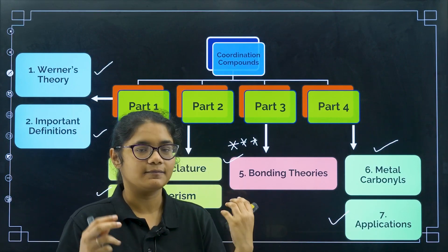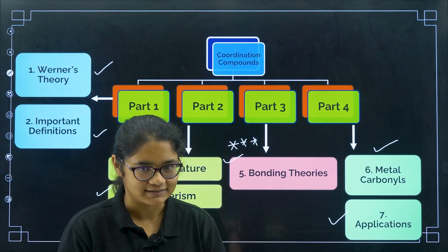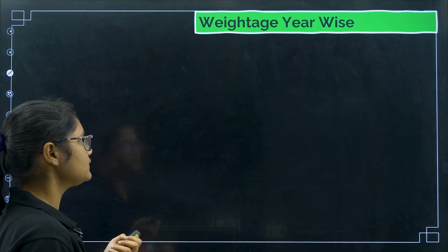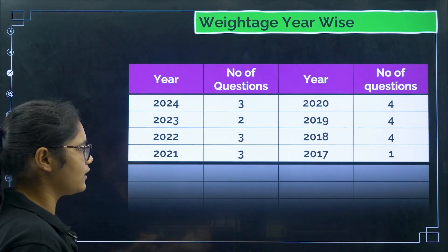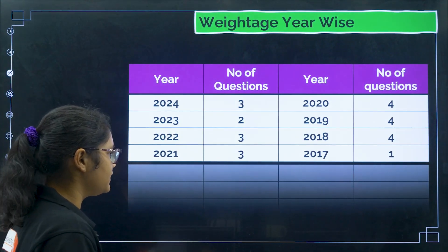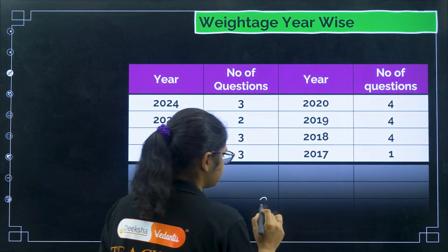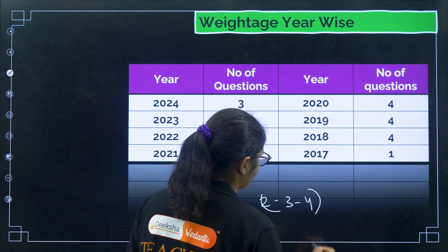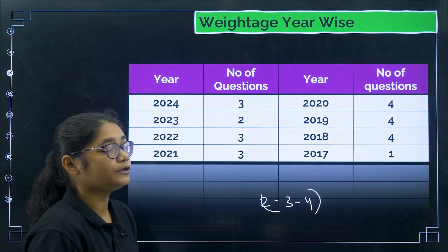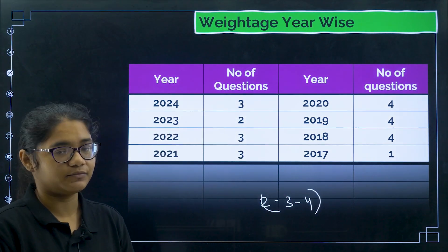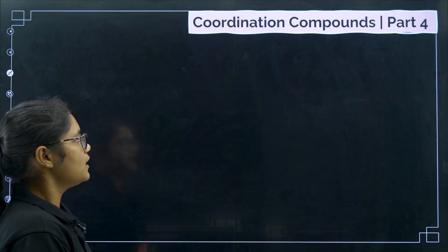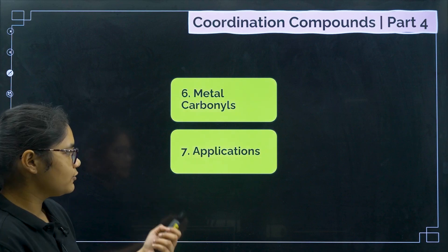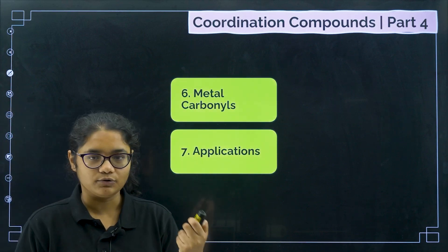Year-wise weightage: you can expect three to four questions from this chapter every year. Coming to part four, there are two things — metal carbonyls and applications.